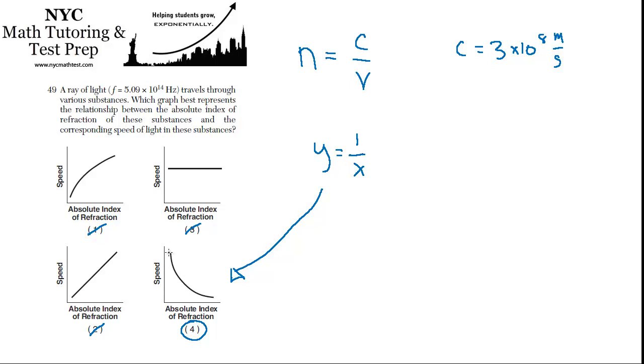And it's going to be asymptotic to both the Y and the X axis. Four is the best choice.